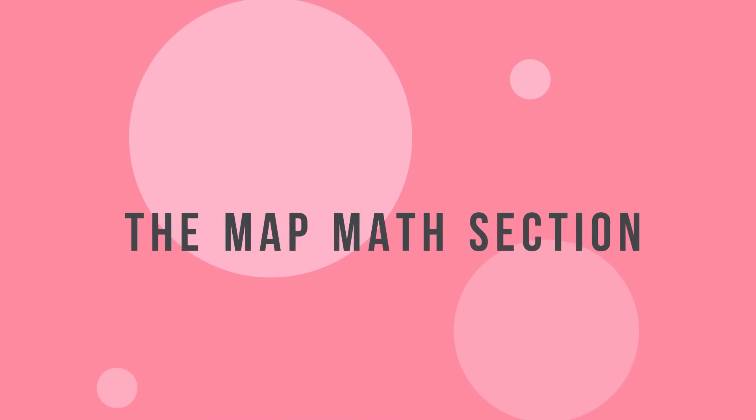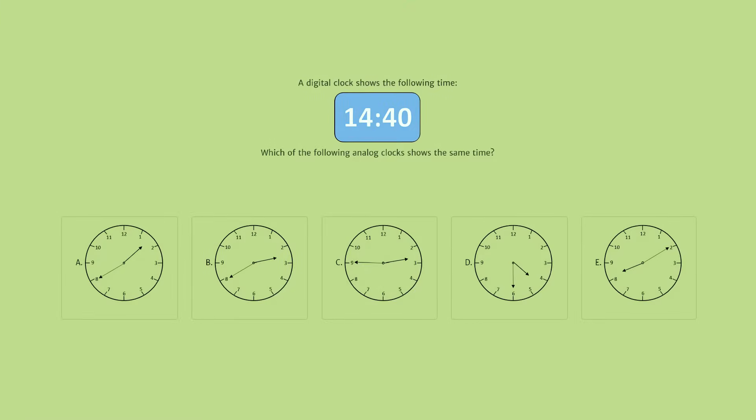The math section on this test covers a specific list of topics ranging from basic to advanced math, while including algebra, geometry, computation, statistics, and more. Does your child feel a little anxious about the MAP math section? Not to worry, that's quite normal. Math anxiety affects approximately a quarter of the population and starts appearing as early as first grade. From our experience, we know that with the correct amount of practice and motivation, your child can overcome any mathematical doubts he or she may have.